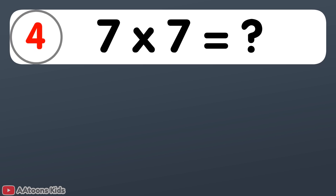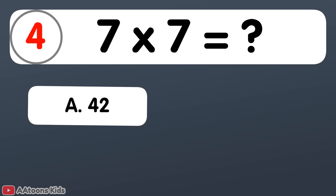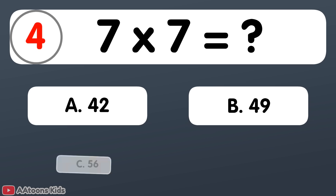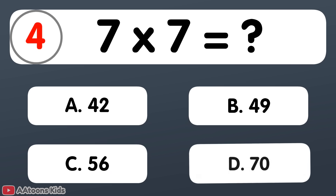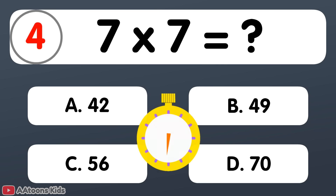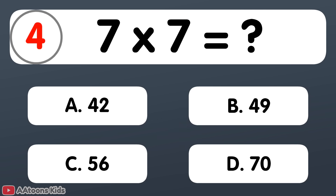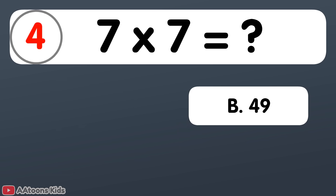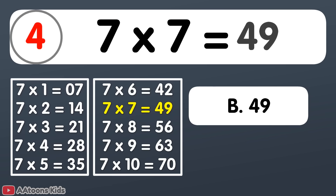7 times 7 is equal to... 49. 7 times 7 is 49.